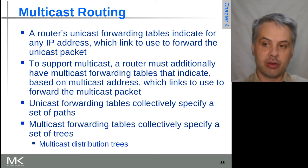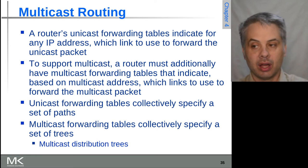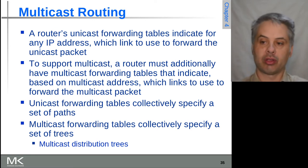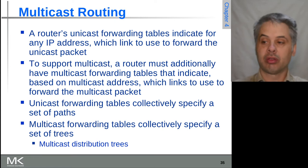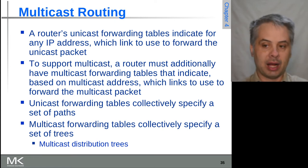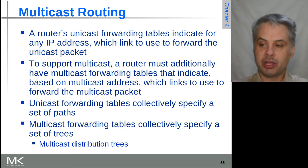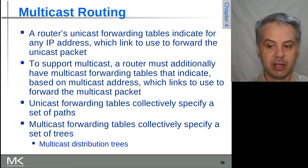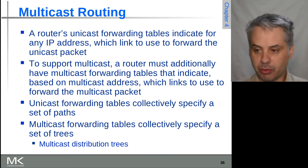That unicast forwarding table is used for sending unicast packets. To support multicast, the router has a separate table for multicast forwarding, so it knows for each multicast address on which links it needs to forward the multicast packets. Unicast tables collectively specify paths between nodes, whereas with multicast it's from one node out to many — a tree structure. So multicast forwarding tables collectively describe trees rather than paths, and these are called multicast distribution trees.